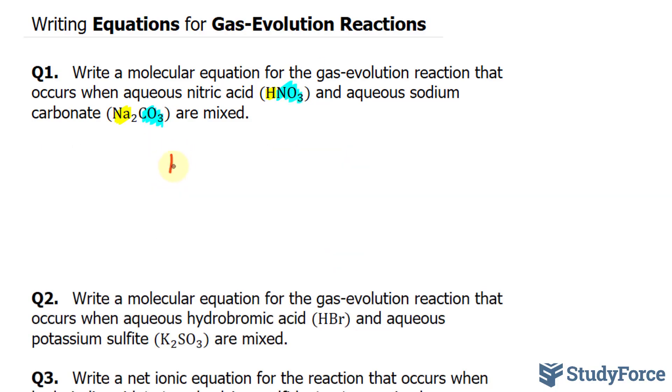Writing our equation, we get HNO3 plus Na2CO3 produces sodium NO3 plus hydrogen coming together with CO3 carbonate, which gives us hydrogen carbonate.